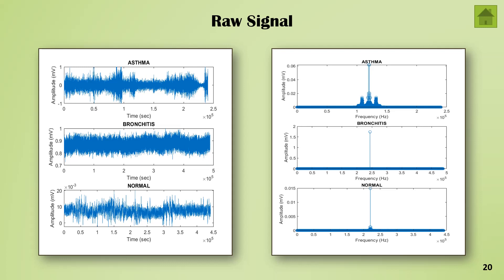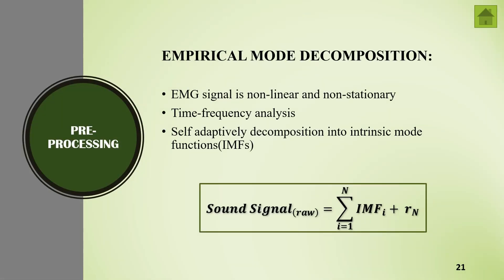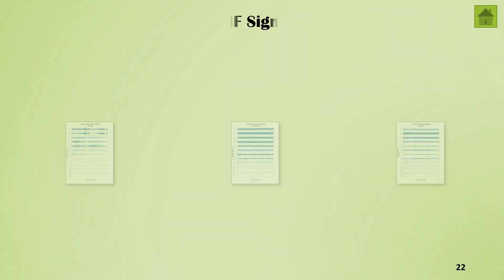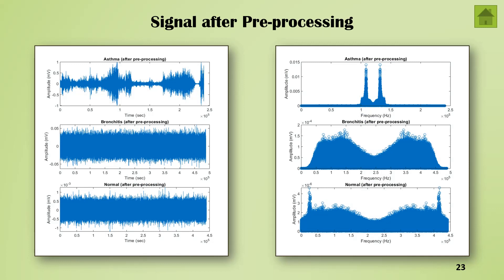That's how our signal looks in the time domain and frequency domain for all three categories, which we take to the next step: pre-processing. For pre-processing, I used empirical mode decomposition (EMD) technique to denoise the raw signal. All low-frequency IMFs are removed from the signal because lung sounds usually lie in the high-frequency range from 400 to 2000 Hz. The region of interest lies in the first intrinsic mode function (IMF), so we took this first IMF for further processing. That's how our signal looks after pre-processing in the time domain and frequency domain.